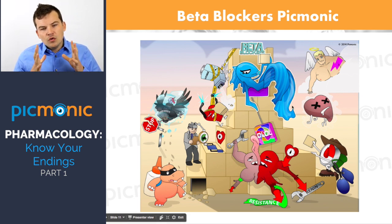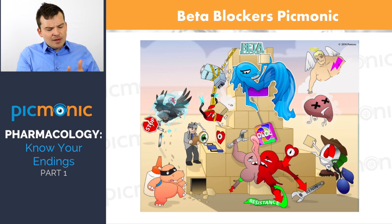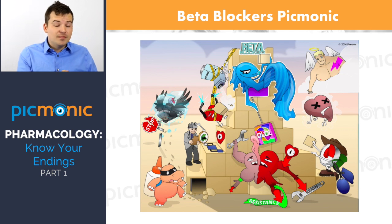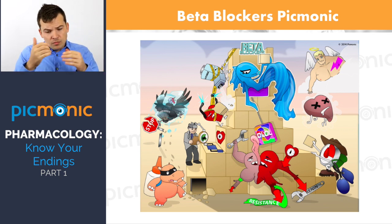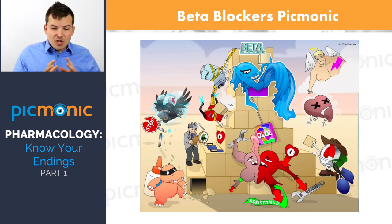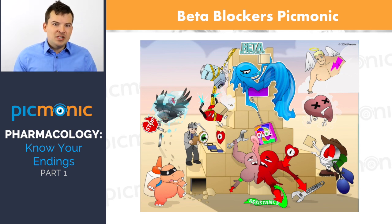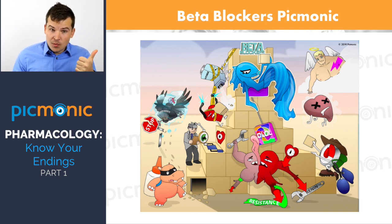In the Picmonic for beta blockers, we use them for hypertension, heart failure, and angina. You always need to check the heart rate first. If a patient has a low heart rate, at the nursing level you can hold the dose and notify the provider. A practitioner might stop the medication, lower the dose, or switch to a different medication.